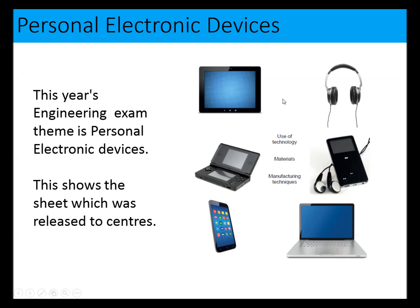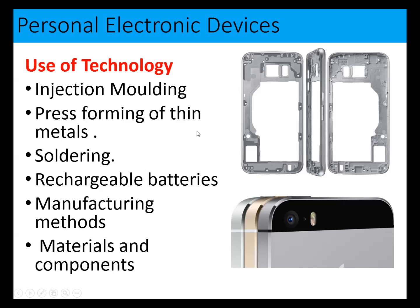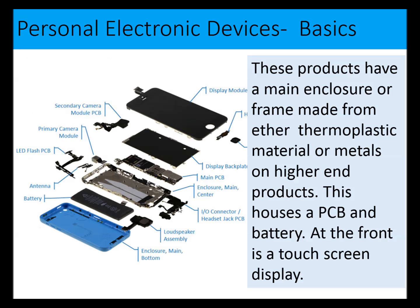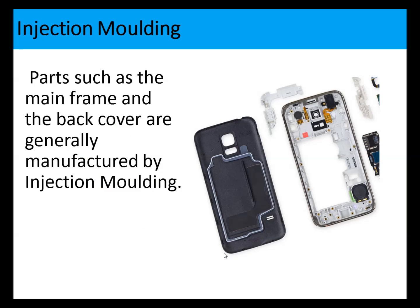This year's exam theme is personal electronic devices. The sheet released to students covers use of technology, materials, and manufacturing techniques. The technology we look at for personal electronic devices includes injection molding, press forming of thin materials or metals, soldering, rechargeable batteries, manufacturing methods, and some materials and components. Most of these products are fairly similar in construction - phones and iPads have a frame of thermoplastic or metal, a PCB, a battery, and a touchscreen display at the front.